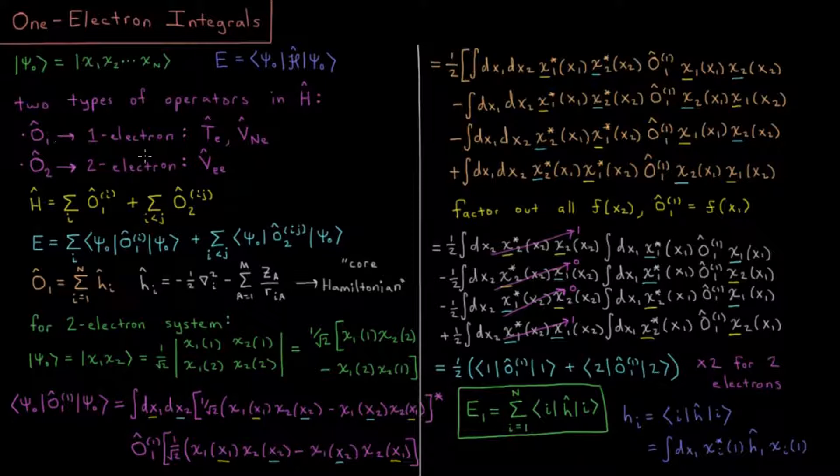There are going to be two types of operators inside our Hamiltonian that we need to worry about. This integral is going to be an integral over all coordinates, but there's going to be two types of integrals left over once we've done all the simplifying we can.